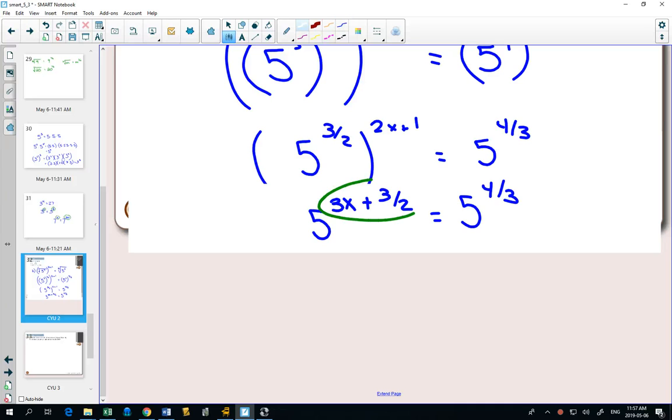And now, we can do the so. So 3x plus 2, or 3x plus 3 halves, has to equal 4 3rds.